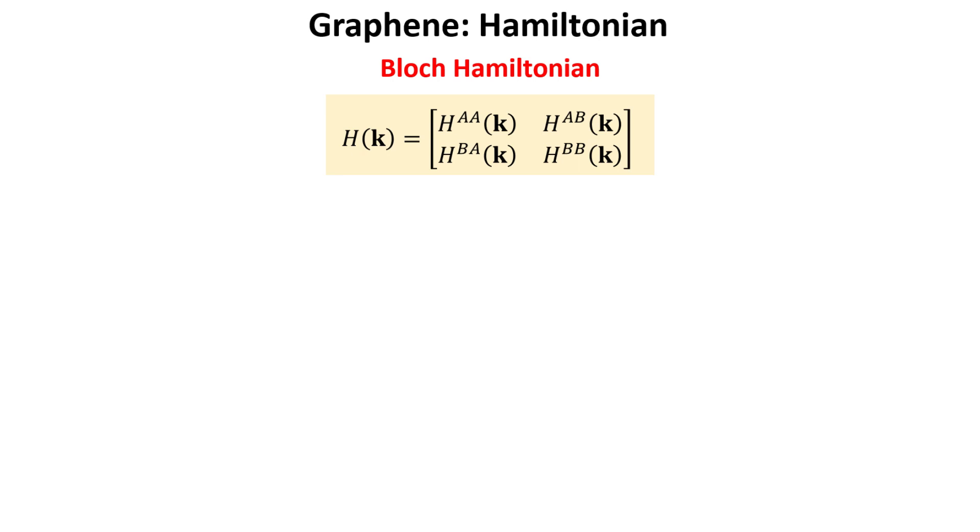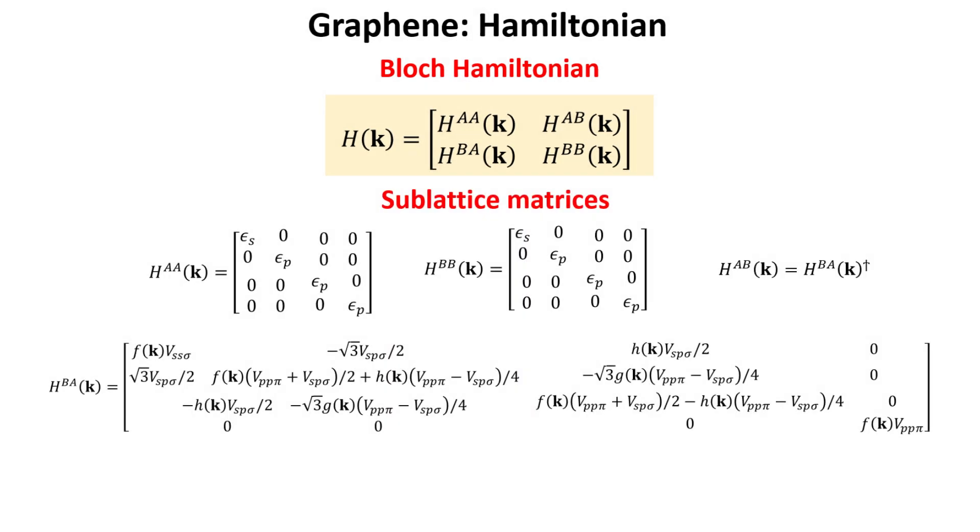Each element is a matrix describing all interactions between the graphene sublattices, which we also denote as the A and B carbon atoms. The sublattice block matrices are given in terms of the Slater-Koster parameters describing sigma and pi bonds between s, px, py, and pz orbital states in neighboring carbon atoms.